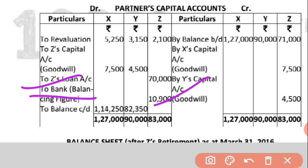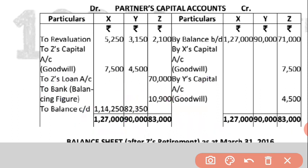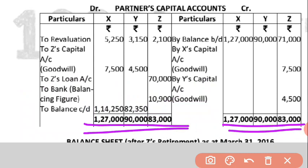You can write 'To Bank' or 'To Cash' for the 10,900 payment. For X and Y's columns: the credit side is greater. Write the balance on both sides: X's closing capital is 1,14,250 and Y's closing capital is 82,350. Write the totals and double-line both sides of the capital account.